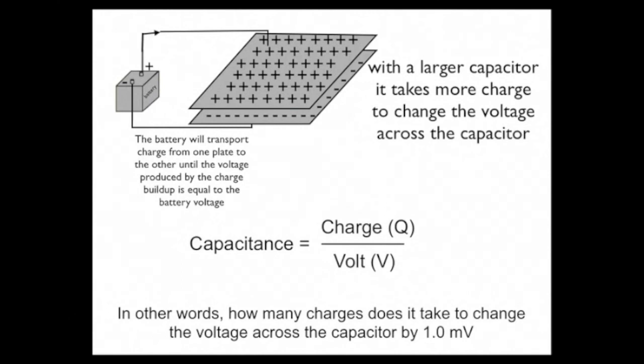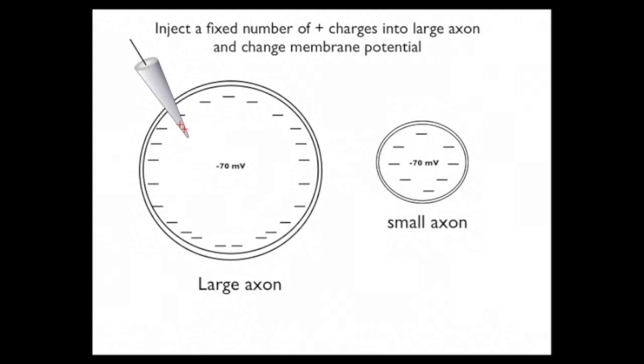Now, I want to illustrate this by looking at a cell, an axon, and seeing how this idea of capacitance has meaning for the depolarization of an axon. Here we have two axons, a very large one on the left and a small one on the right.